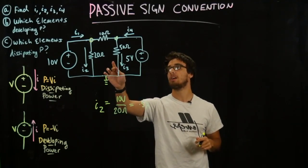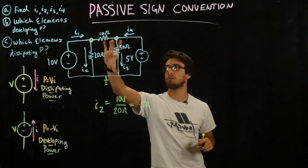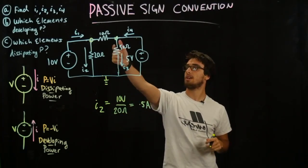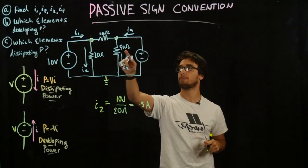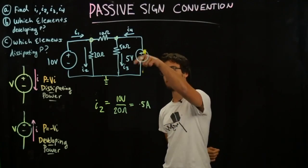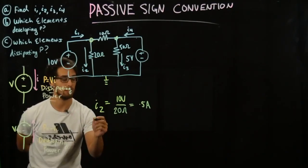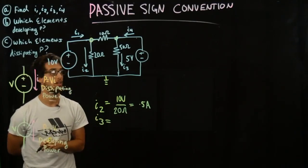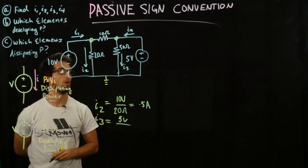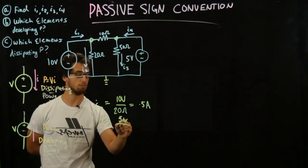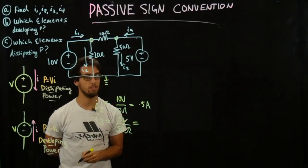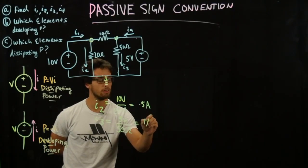Similarly, on this side, we know that there's 5 volts across these two terminals and we know there's 50 ohms across it as well. So 5 volts divided by 50 ohms gives us I3. We can say that I3 is equal to 5 volts over 50 ohms, which is equal to 0.1 amps.